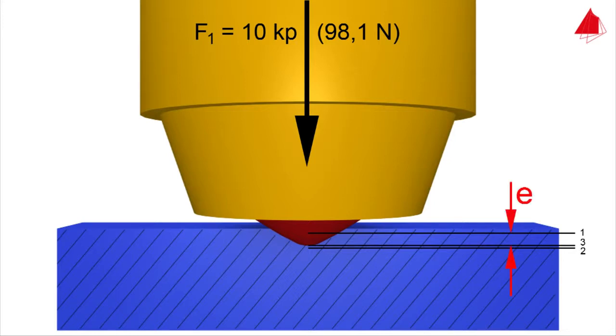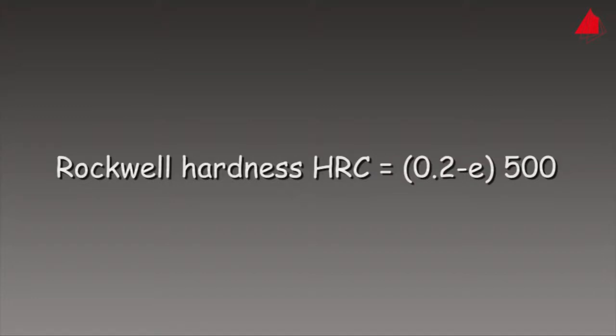This is how the Rockwell hardness is calculated: Rockwell hardness HRC equals 0.2 minus permanent depth of indentation E in millimeters times 500.